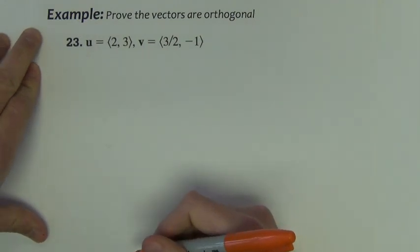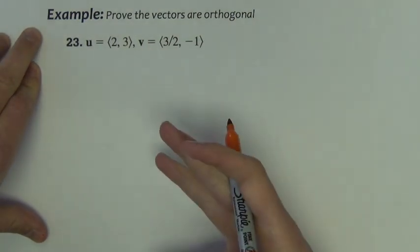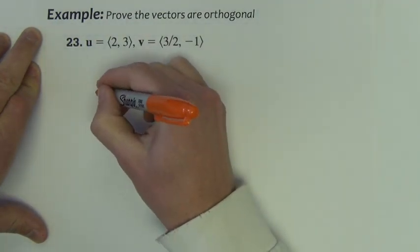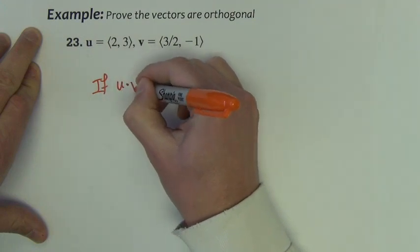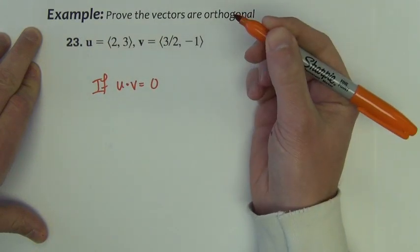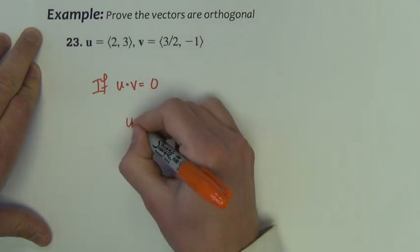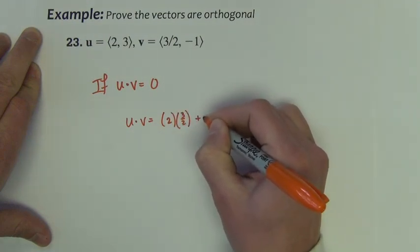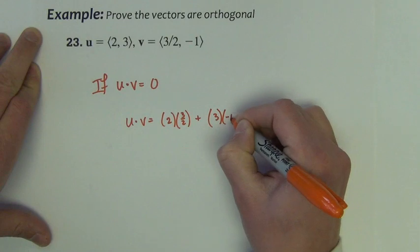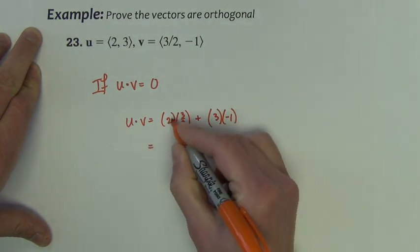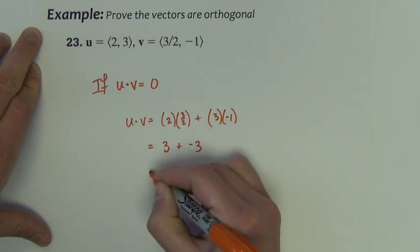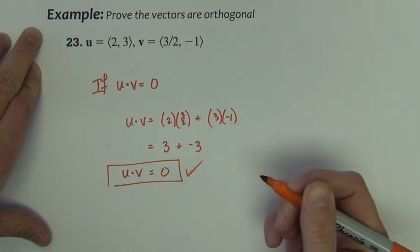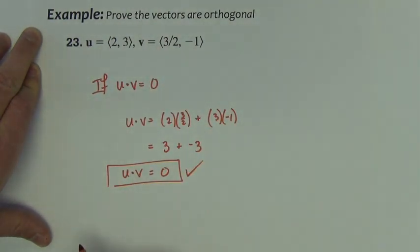The example says prove the vectors are orthogonal. They're orthogonal if u·v equals zero. So I'm going to find the dot product to show that it's zero. u·v is x times x plus y times y. This becomes 3, this one becomes negative 3, which is zero. So by showing that u·v is zero, I have proved that these two vectors are, in fact, orthogonal.